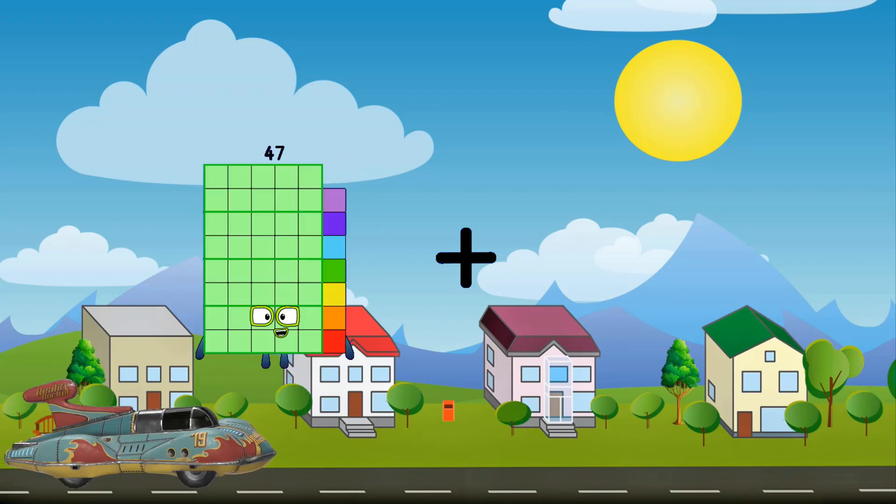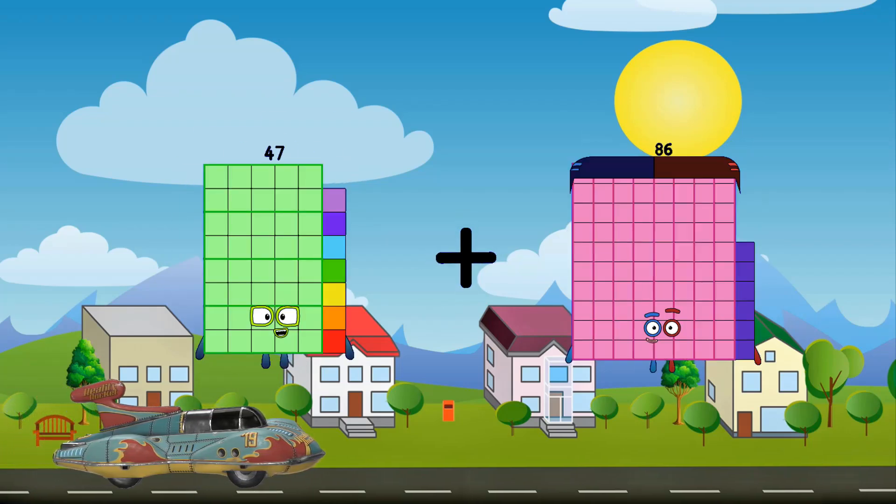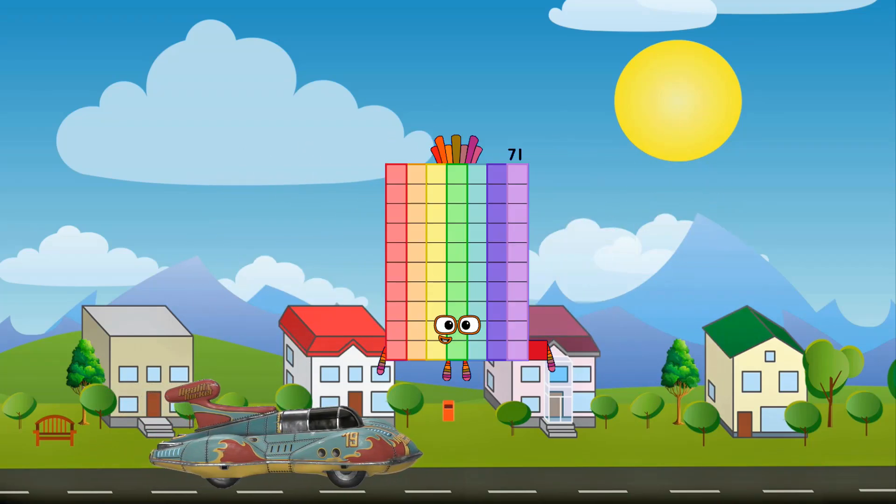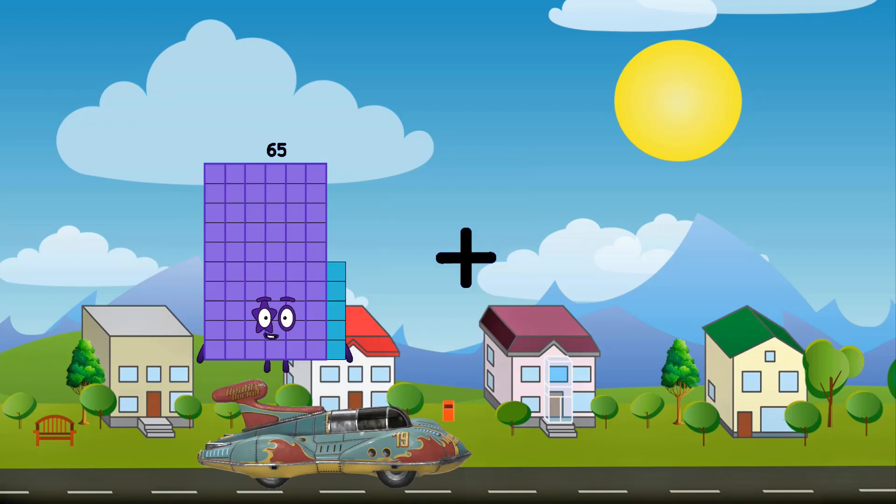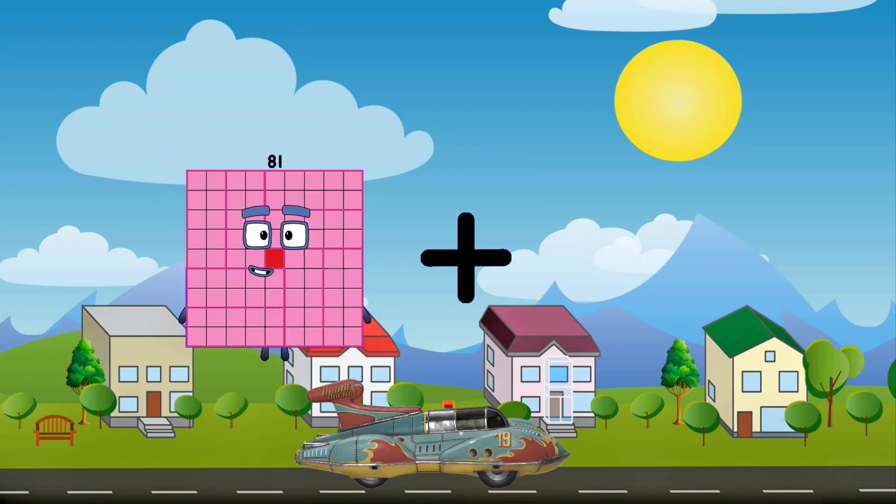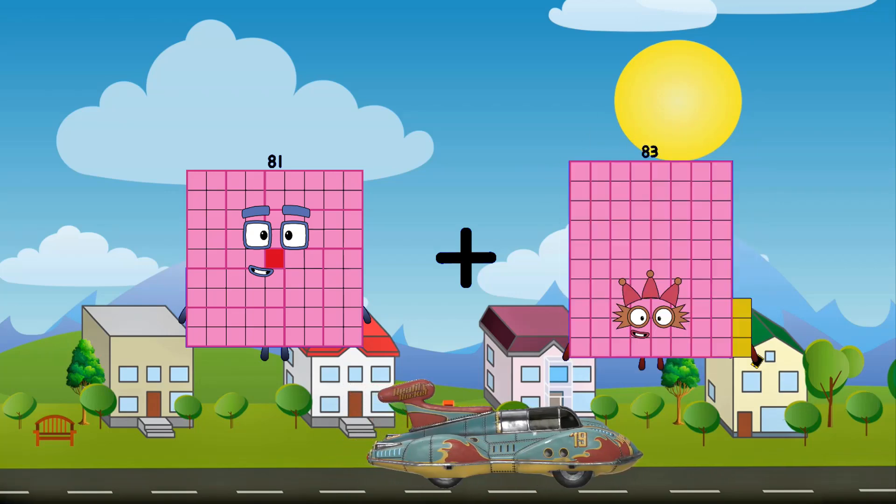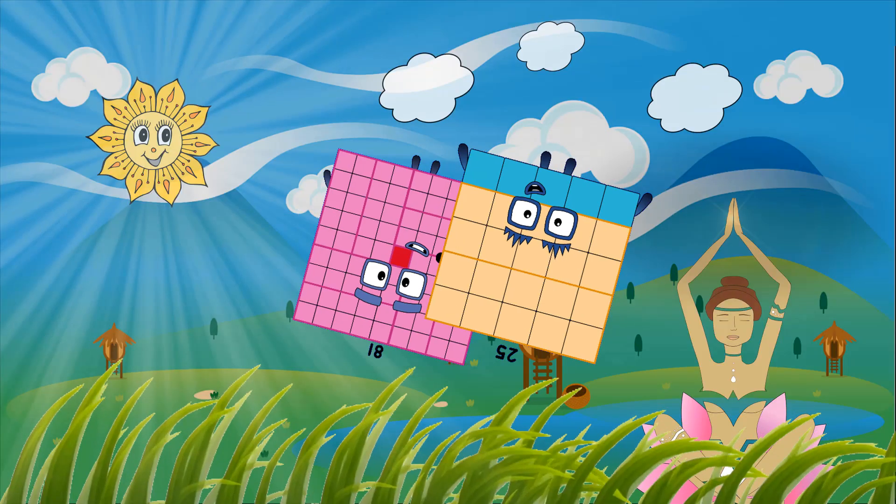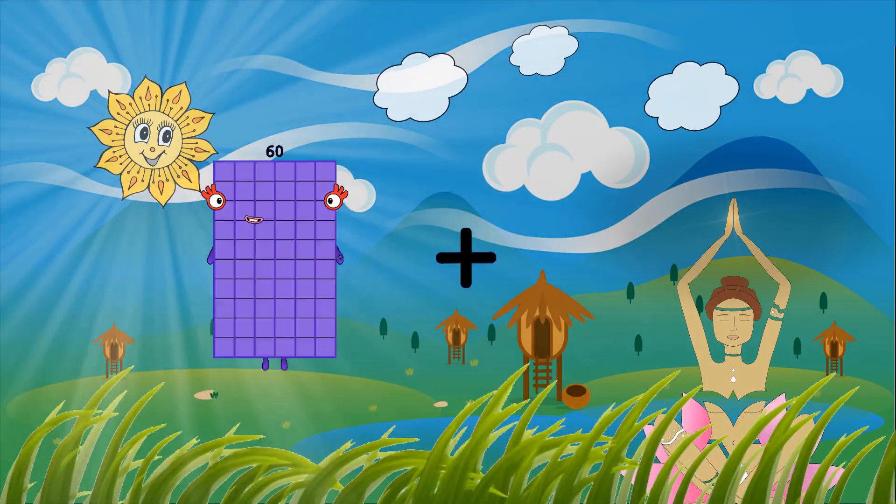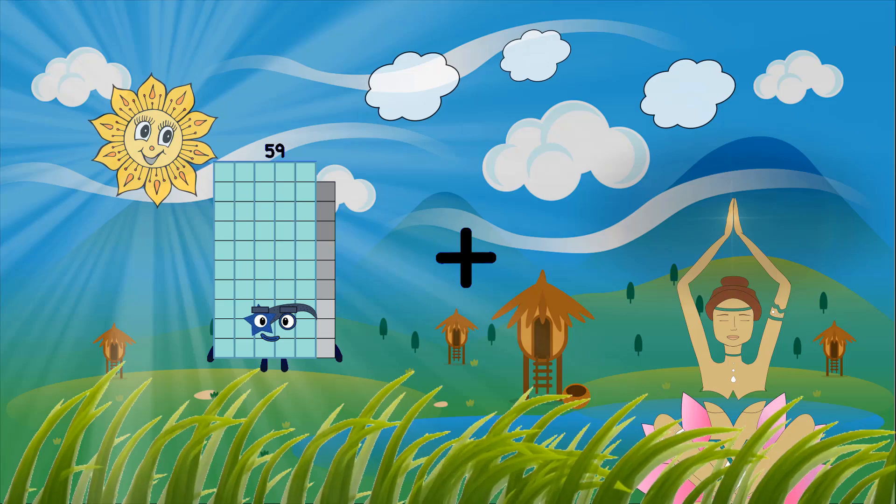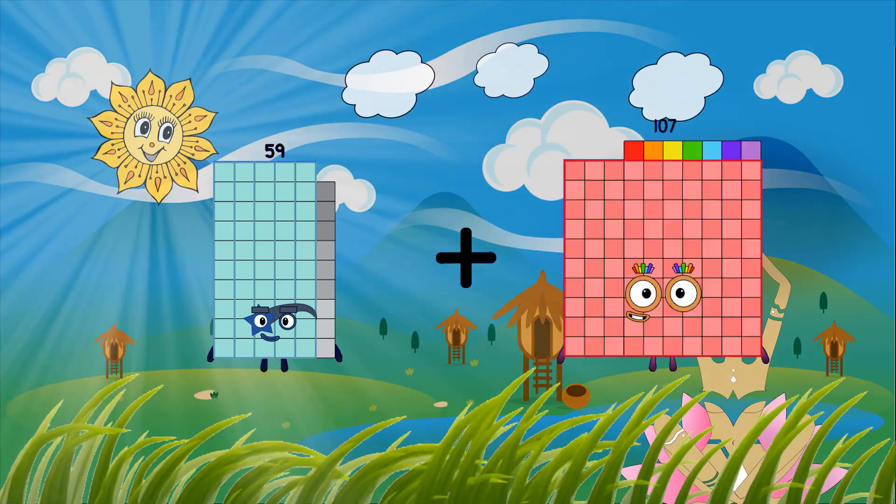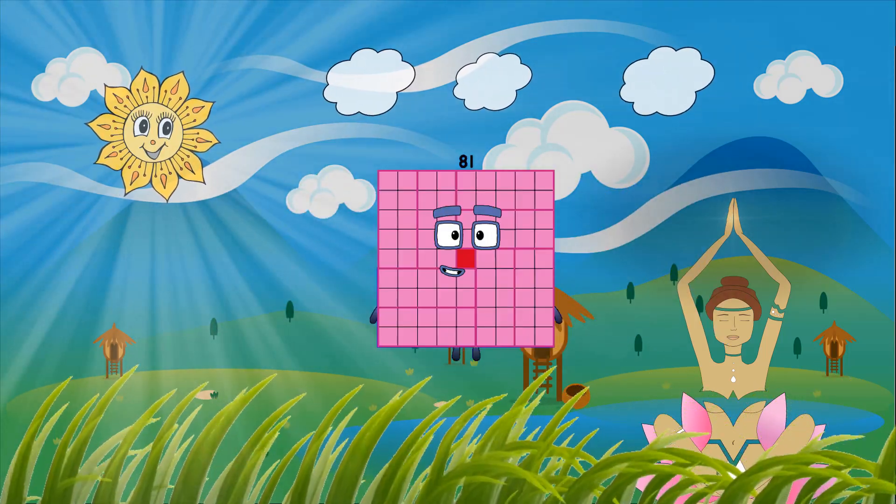47 plus 24 equals 71. 81 plus 25 equals 106. 59 plus 22 equals 81. I'm happy, I'm even.